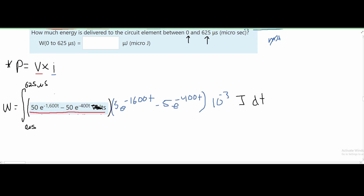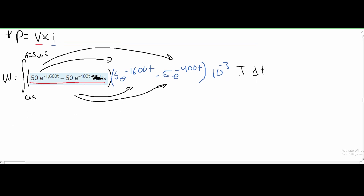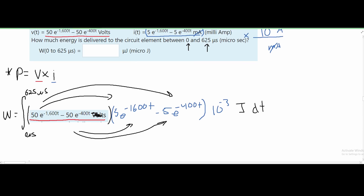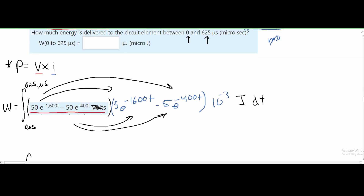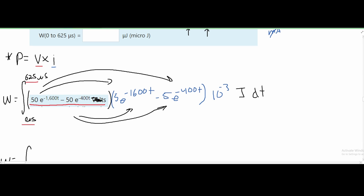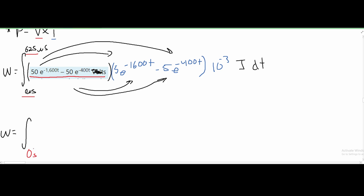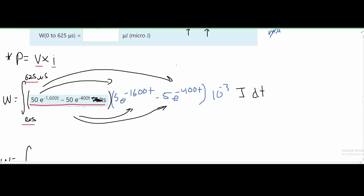Now we factor everything in — multiplying terms together using basic algebra. So our energy integral runs from 0 microseconds to 625 microseconds, but we want these limits in seconds. Since 0 microseconds is just 0 seconds we can leave that, and we just need to convert 625 microseconds.